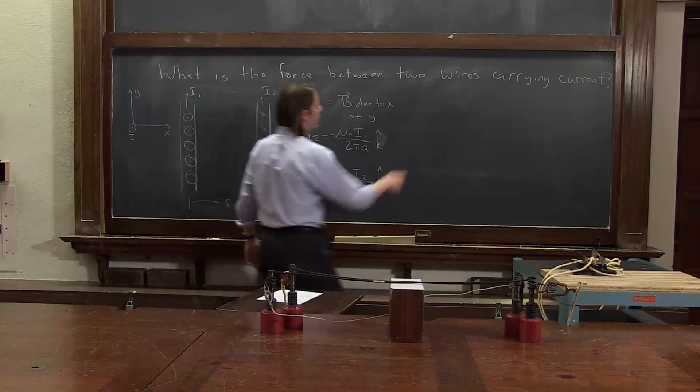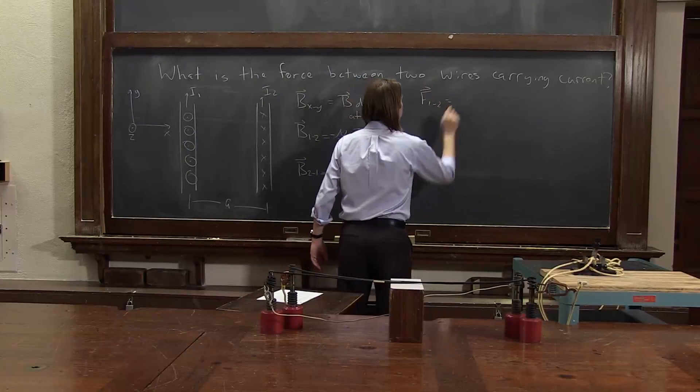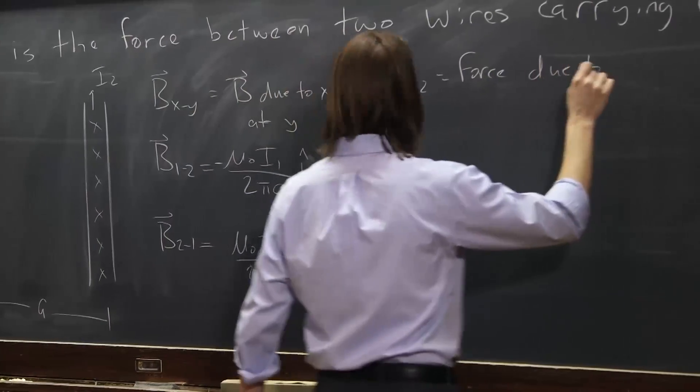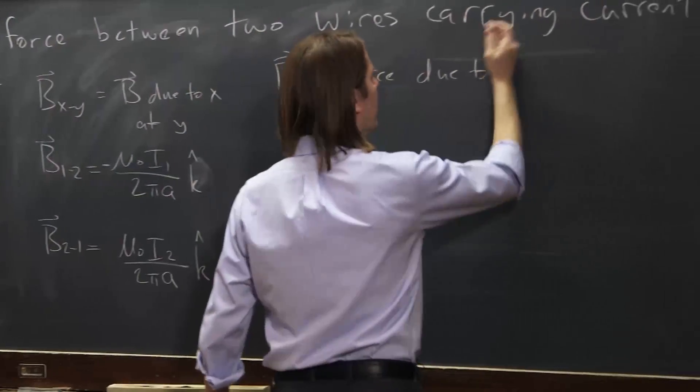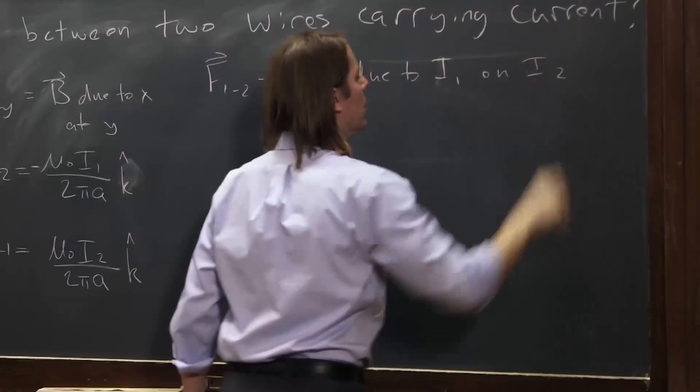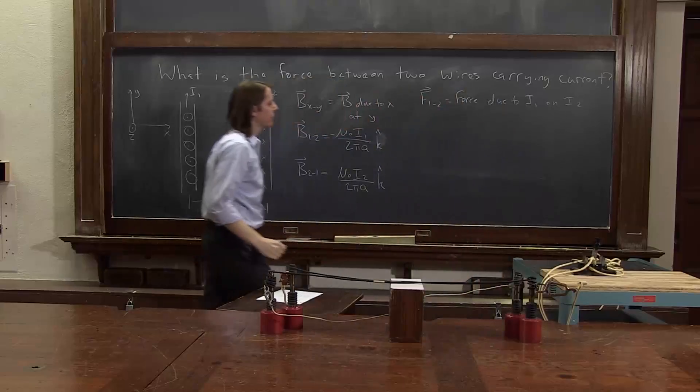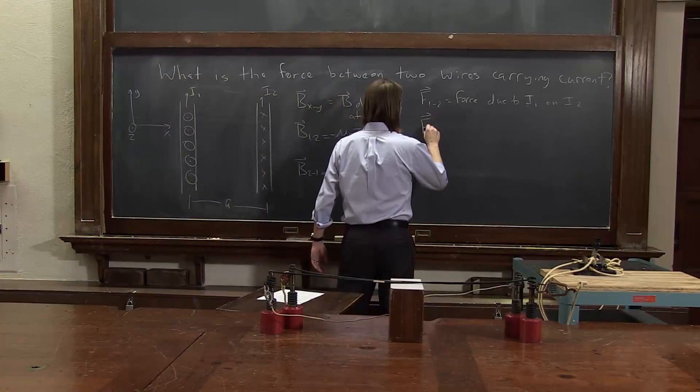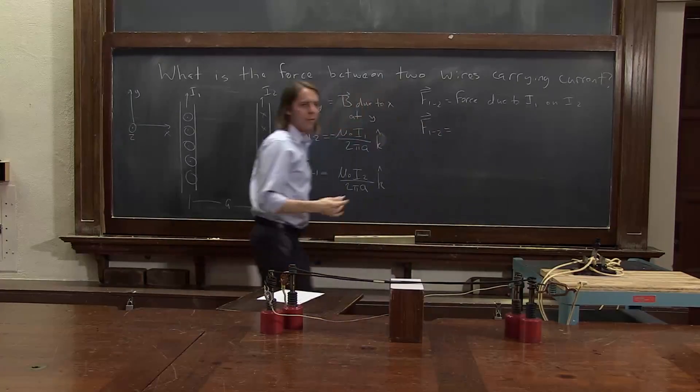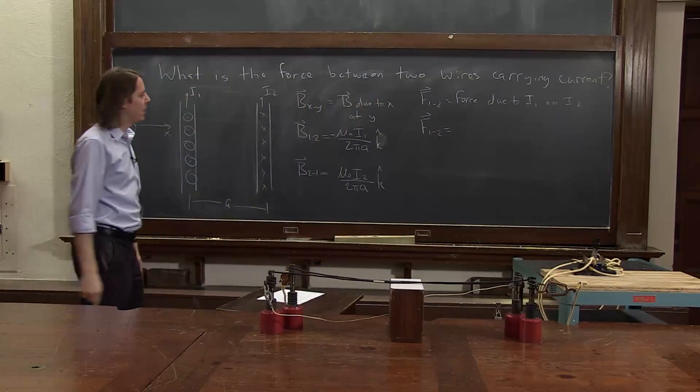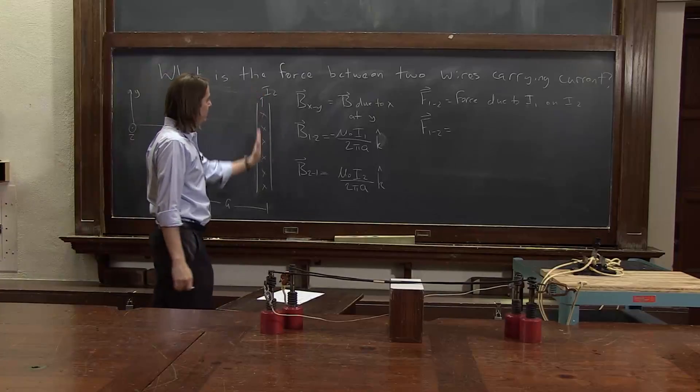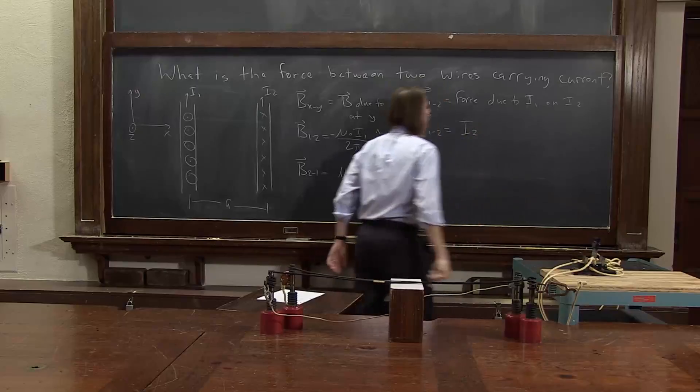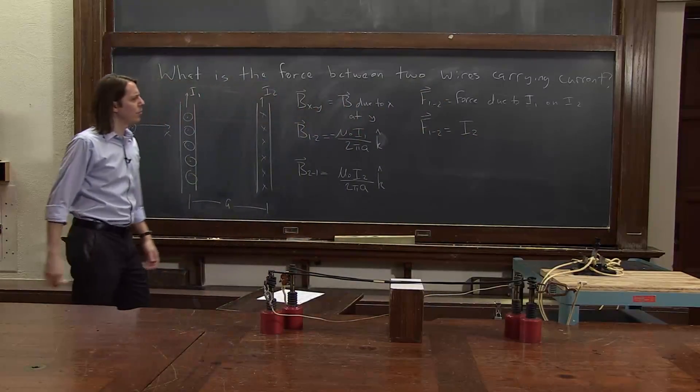So next, let's do F12. This is the force due to one, i1, on i2. Okay, so F12, then, let's think about it. We know that the force on a wire is IL cross B. So the force on i2 depends on its own current. So it's I2. And then L cross B.